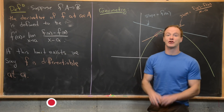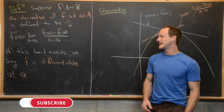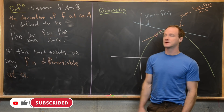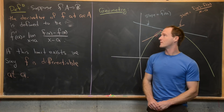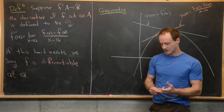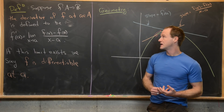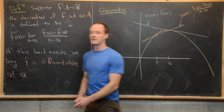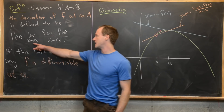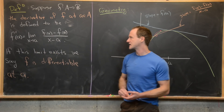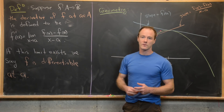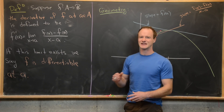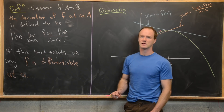Here we're going to begin looking at the notion of the derivative of a function and differentiability of a function. So let's look at a definition. If we've got a function f from A to ℝ, where A is a subset of the real numbers, the derivative of f at a is defined to be f prime of a, which is equal to the limit as x approaches a of f(x) minus f(a) over x minus a. This is pretty similar to the limit definition of the derivative generally given in a Calculus 1 class.